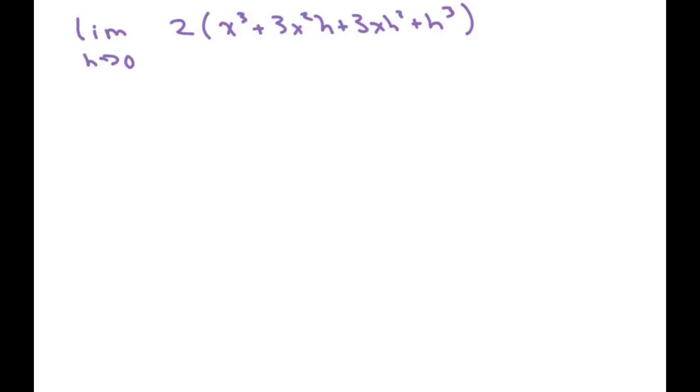Plus 5x + 5h minus 7. Then we're going to subtract the whole function, which is going to be negative 2x³ - 5x + 7. And that's supposed to go up here, and that's supposed to be all over h.